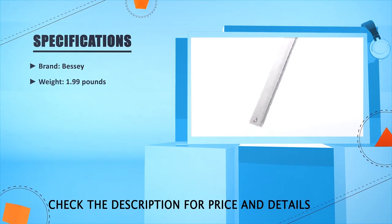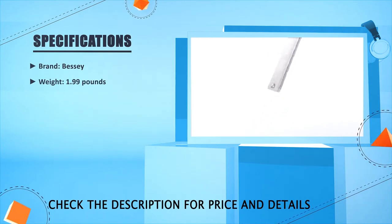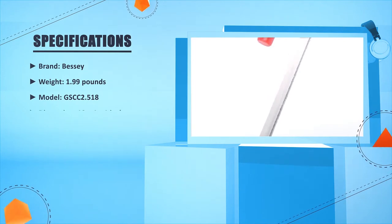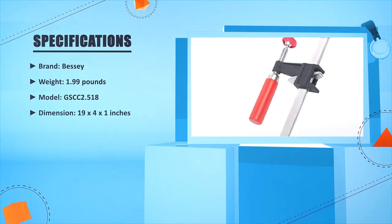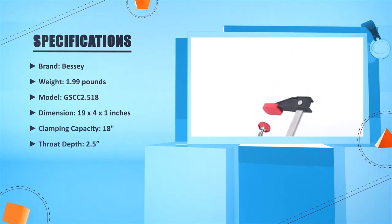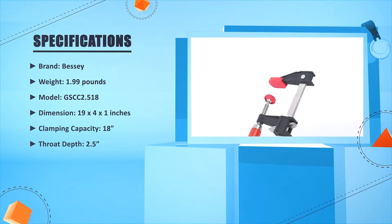Brand: Bessie. Weight: 1.99 pounds. Model: GSCC 2.518. Dimension: 19 x 4 x 1 inches. Clamping capacity: 18 inches. Throat depth: 2.5 inches.